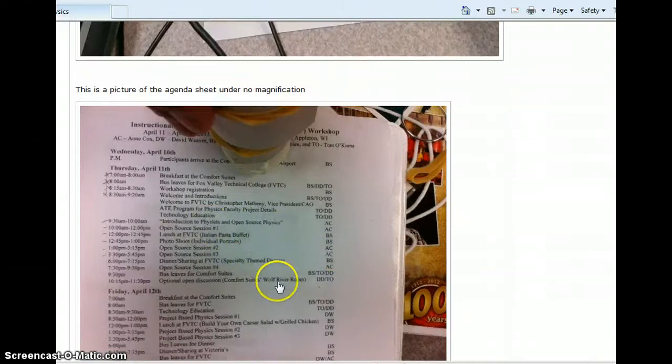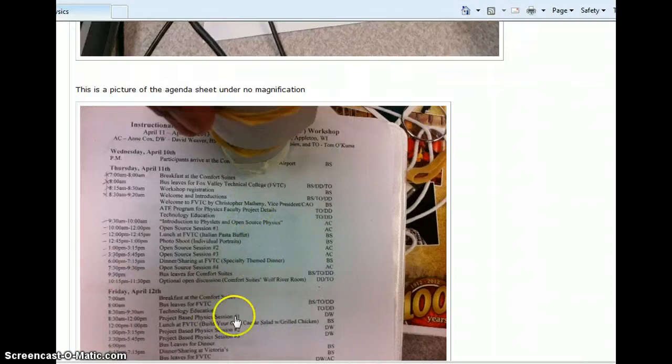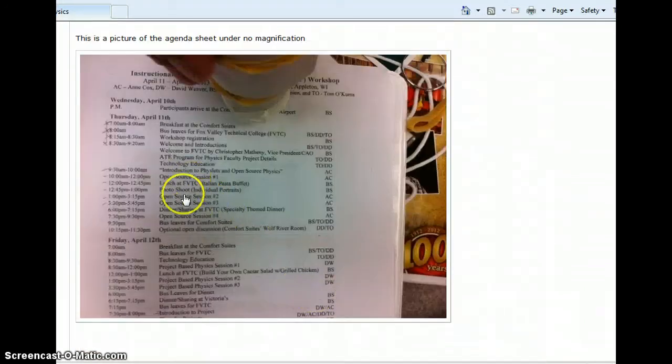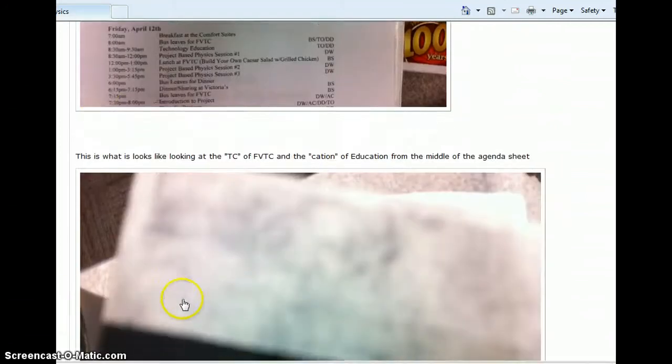This is a picture of an agenda sheet. If you look at part of this, I think in the middle, this part here is what we see in the next picture. And there it is, the TC part in the ation. That's a pretty nice little mag. This was what magnification? Six. Very cool guys, good work.